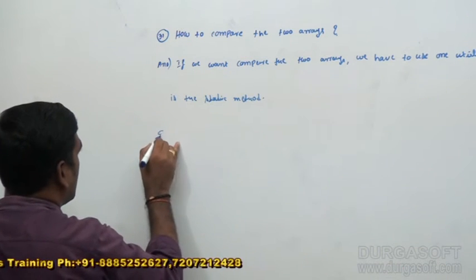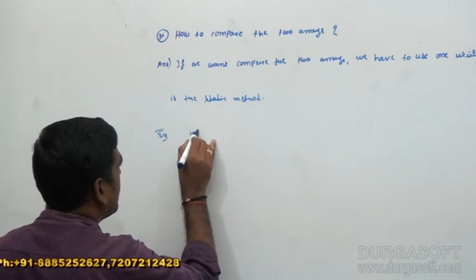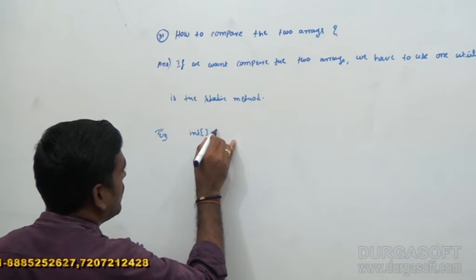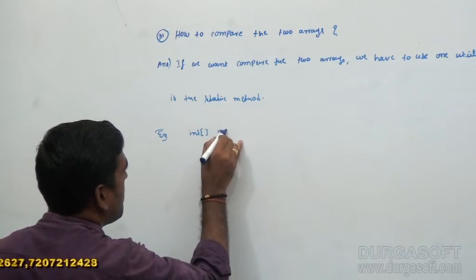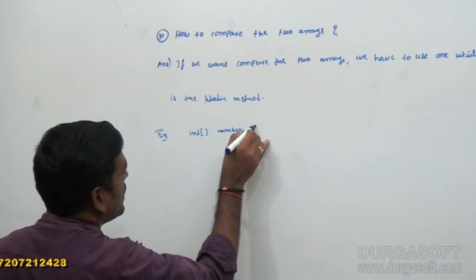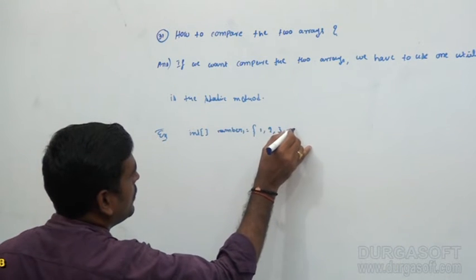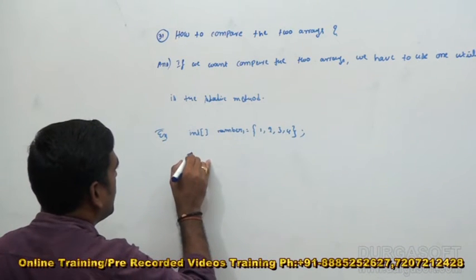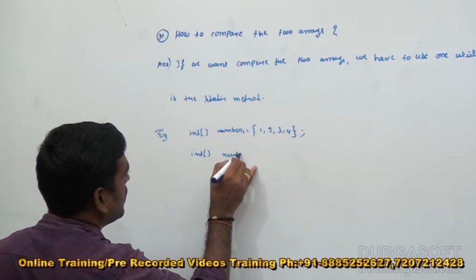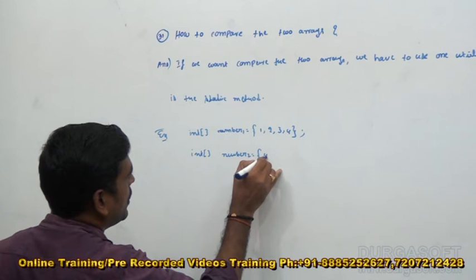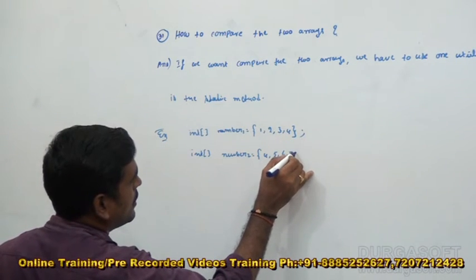For example, I am taking here one integer array: int num1 = {2, 1, 2, 3, 4}. I am going to take one more array: int num2 = {4, 5, 6, 4, 5, 6, 7}.